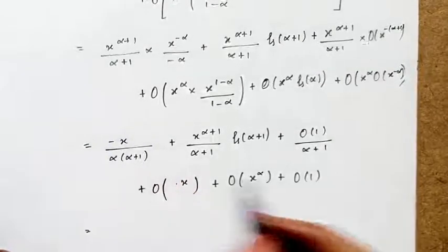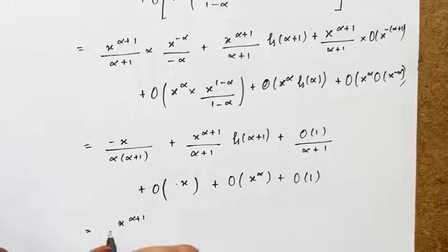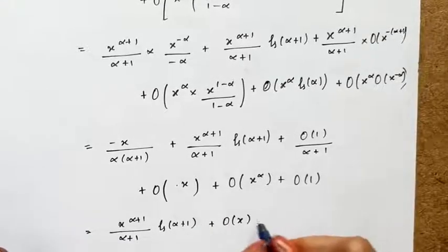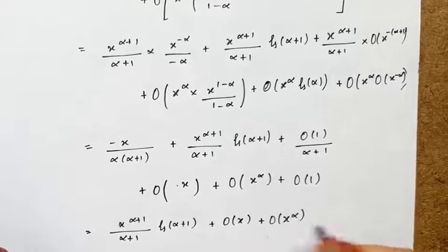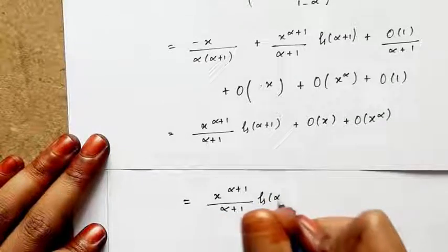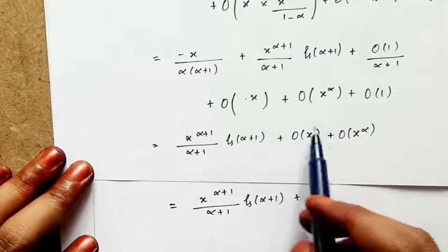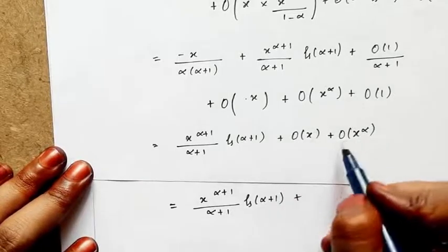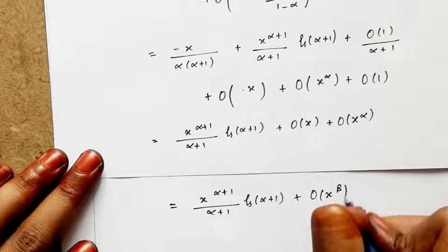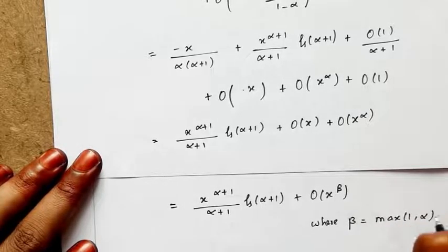Collecting terms, the x and big-O terms are lower order, so we get: x^(α+1)/(α+1) · g(α+1) + O(x) + O(x^α). Since the problem defines β = max(1, α), we replace both O(x) and O(x^α) by O(x^β). Hence the final result is: sum over n ≤ x of σ_α(n) = x^(α+1)/(α+1) · g(α+1) + O(x^β), where β = max(1, α). Hence the proof.